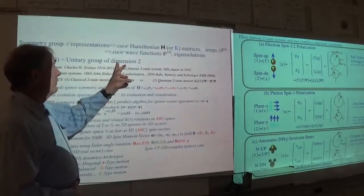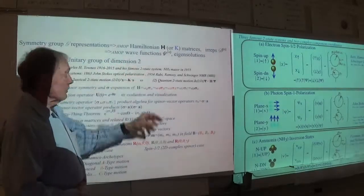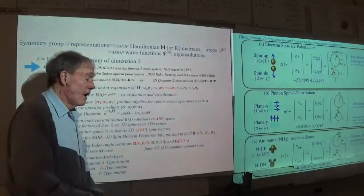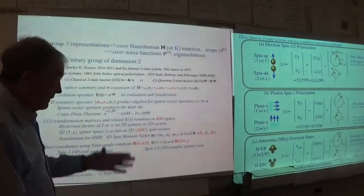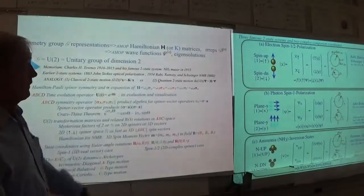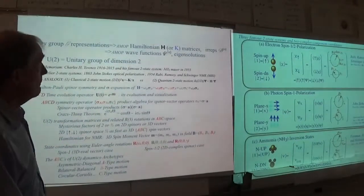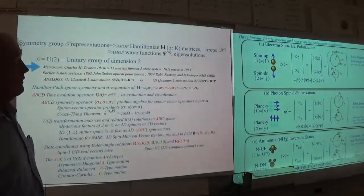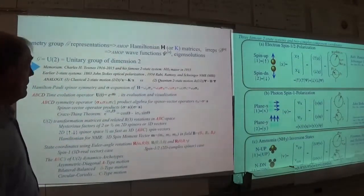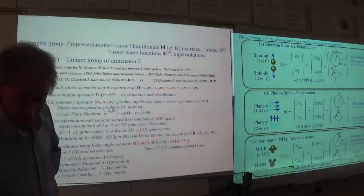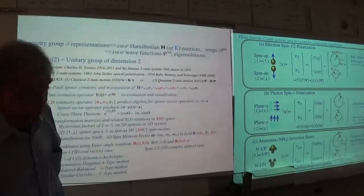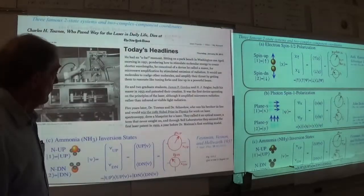The group we're working with now is not just C2. We're working with the entire U(2) group today. This is a group not of order 2, but with an infinite number of elements — and we'll see that infinity play a very big role. This is dimension 2, two complex dimensions.